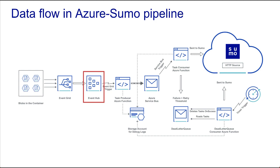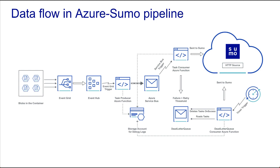On the receipt of data from the event grid, an event hub triggers its Azure function named Task Producer to create a task. This is a JSON object that includes the start and end byte of the block blob. These tasks are then pushed to the Azure Service Bus Queue.